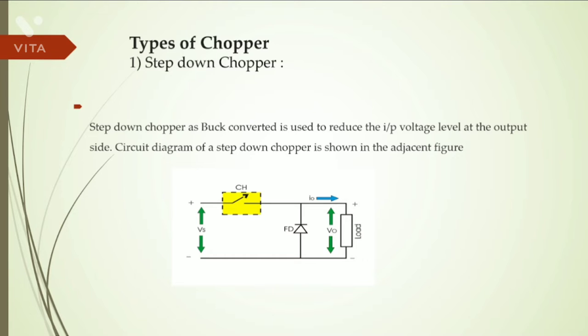Now we will see types of choppers. The first type is step down chopper. The step down chopper is a buck converter and is used to reduce the input voltage level at the output side. This is the circuit diagram of a step down chopper.